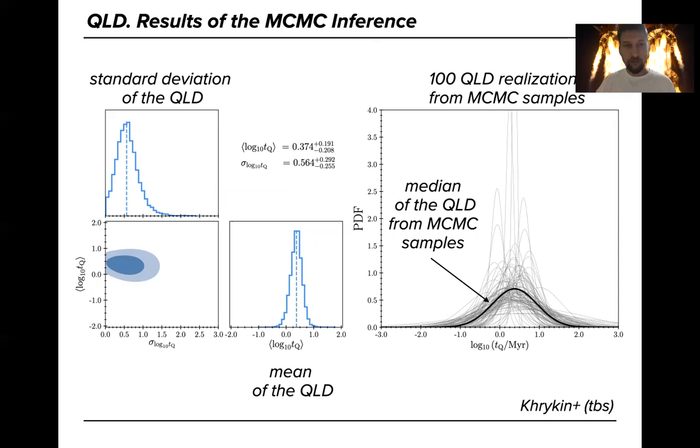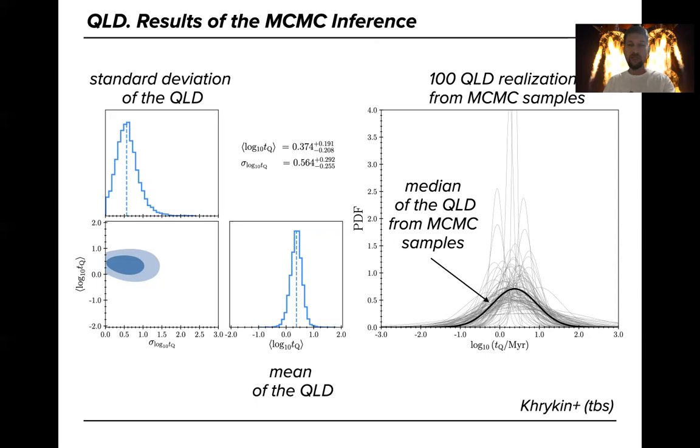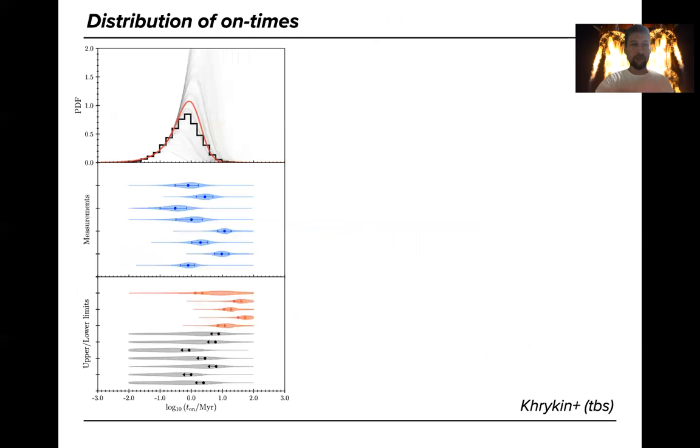But we can do a little bit more and we can actually go back from the distribution of lifetimes to the distribution of on-times. We found the analytical equation that helps us to translate the distribution of lifetimes to the distribution of on-times which is shown here in the top panel by the red curve which corresponds to the median here, this black curve, and we also have 100 realizations.